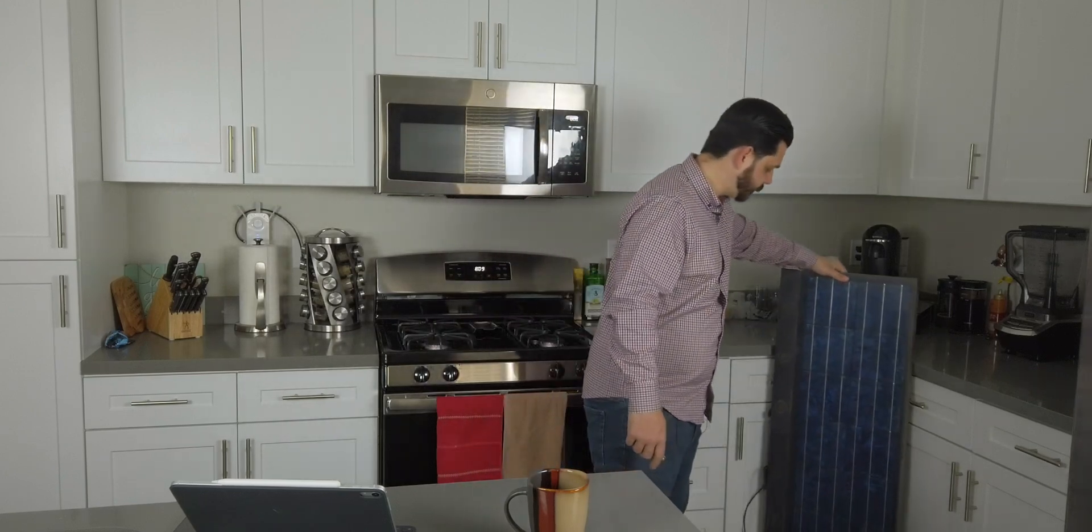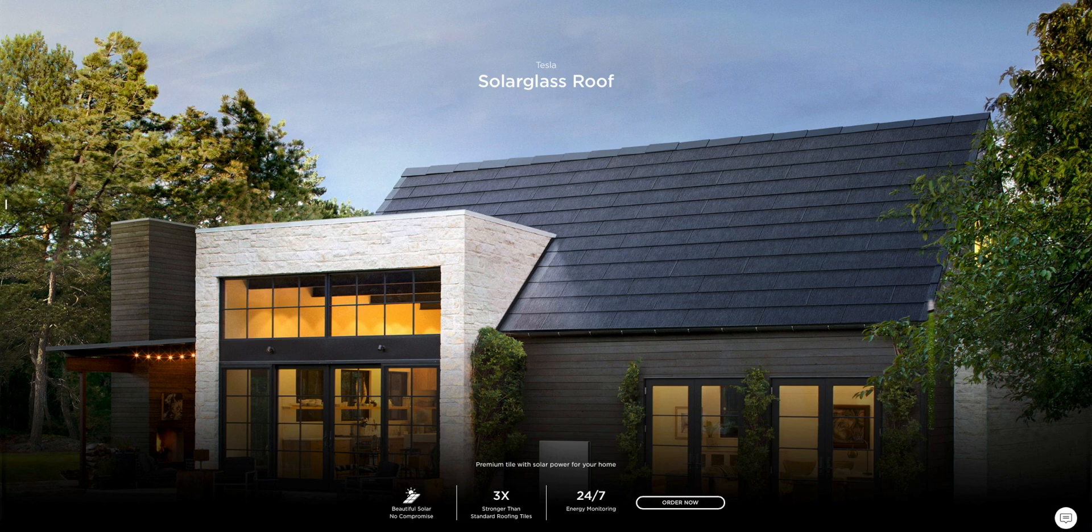So I'm going to set this back. Now, let's compare it to a solar glass roof. Well, I can't. Because Tesla isn't forthcoming with the spec sheets on the solar glass roof. What I do know is what's on their website. And why don't we take a look at that? So, here it is. Solar glass roof. Beautiful solar with no compromise. Hard to know without specs, but let's continue. It's three times stronger than a standard roofing tile. But if it's anything like the Cybertruck glass, it might be about the same. And 24-7 energy monitoring. That's a standard feature on every solar system.